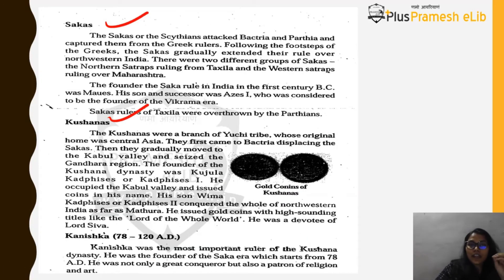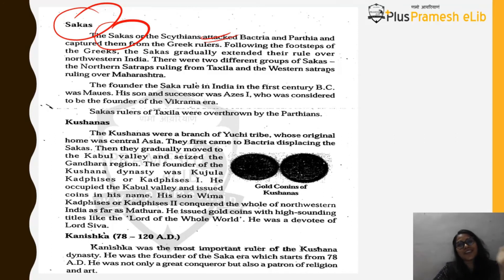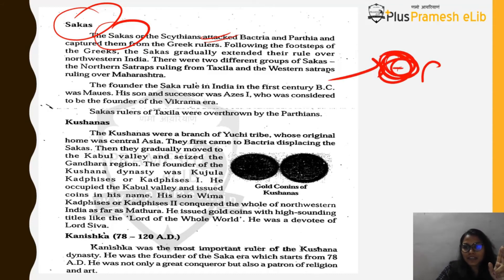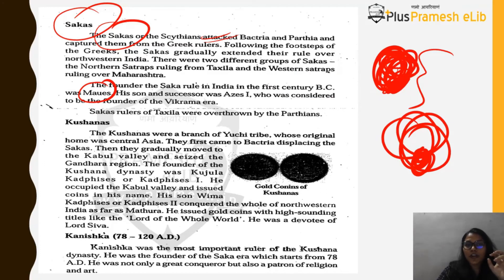The Sakas, also known as Scythians, attacked Bactria and Parthia, capturing them from the Greeks, and then extended their empire into northwest India. There were two Saka satraps: the northern satraps ruling the Taxila region, and the western satraps ruling the Gujarat–Maharashtra region. The founder of Saka rule in India in the 1st century BC was Maues; his son Azes I was considered the founder of the Vikrama Era. Saka rulers of Taxila were overthrown by the Parthians.